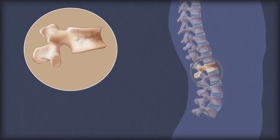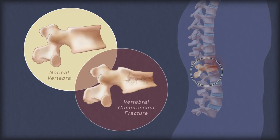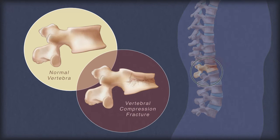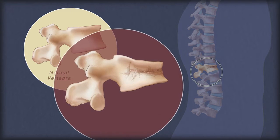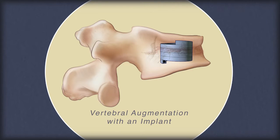If you have a collapsed vertebra, also known as a vertebral compression fracture, your doctor may recommend placing an implant and cement into the body of the vertebra. This procedure is called vertebral augmentation with an implant.